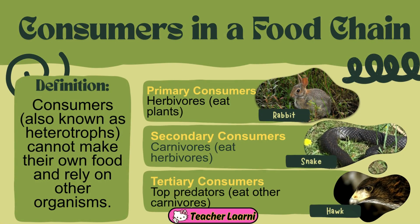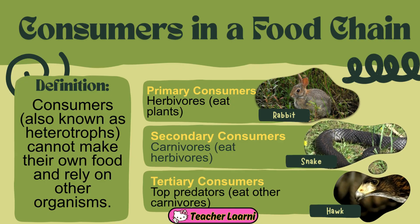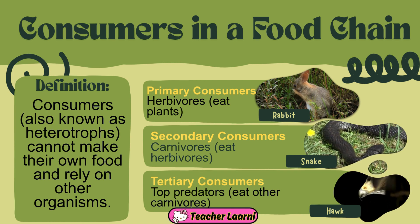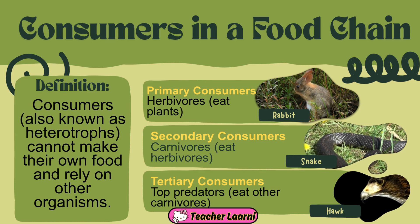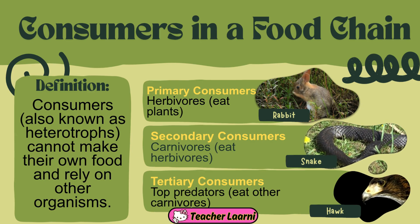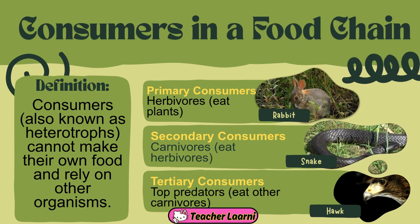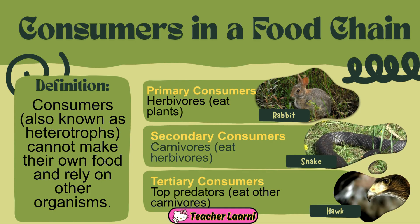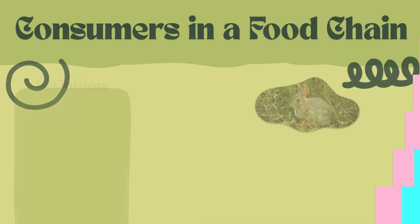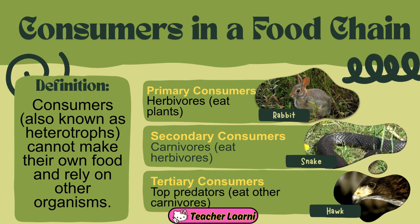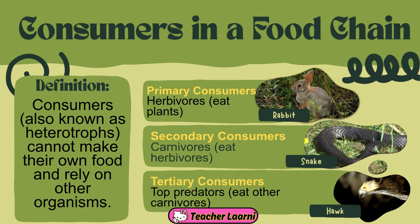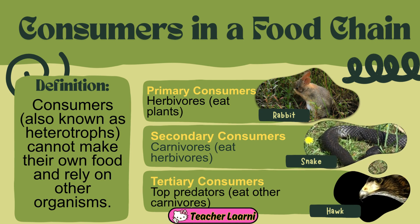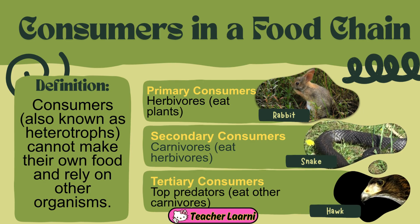Consumers in a food chain: consumers, also known as heterotrophs, cannot make their own food and rely on other organisms. Primary consumers or herbivores consume plants for food. These creatures, whether insects or larger animals like grasshoppers and rabbits, represent the first level of consumers in the chain. Following them are the secondary consumers, often carnivores — animals that prey on herbivores, whether they are birds, spiders, or other carnivorous beings. They occupy the second level of consumers.